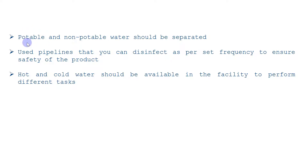On top of the previous requirements, keep in mind that potable and non-potable water should be separated in the facility. Use pipelines that you can disinfect at a set frequency to ensure product safety. Also ensure the availability of hot and cold water as required for performing different tasks like washing, cleaning of the area and equipment, and sometimes hand washing. This covers all of sub-clause 6.2.